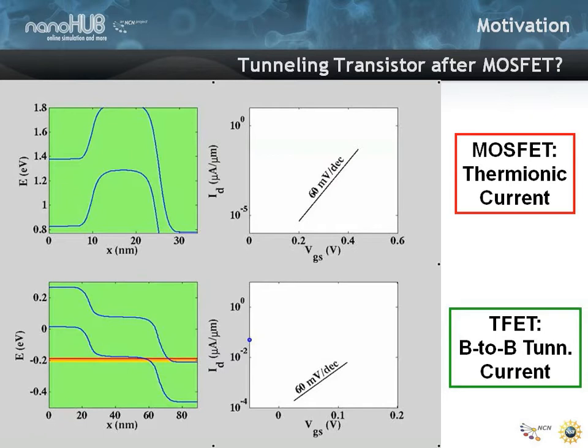Why would you want to do that? You want to reduce power in the device, which is the switching power. So you want to limit the swing you need over which to switch, and you want to reduce the voltage.